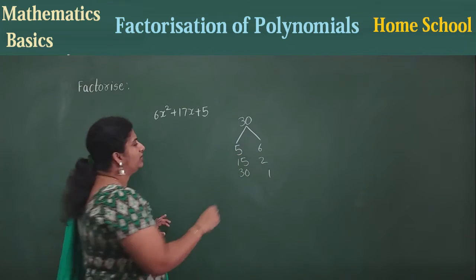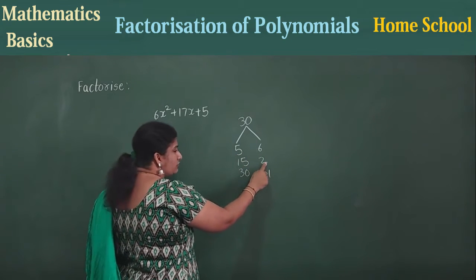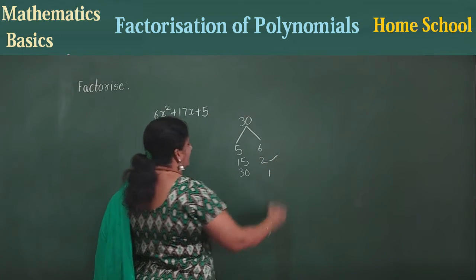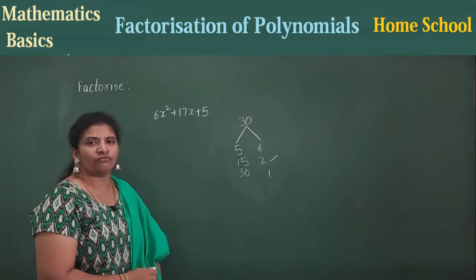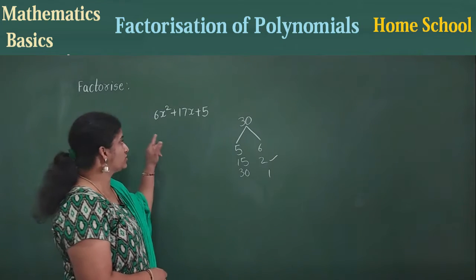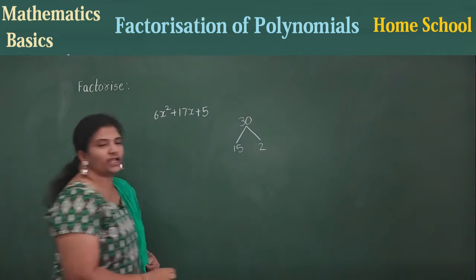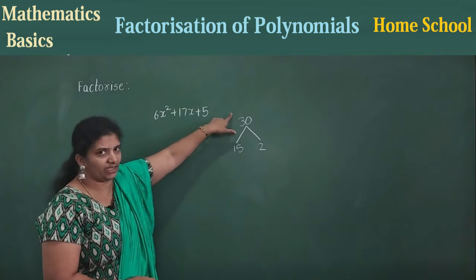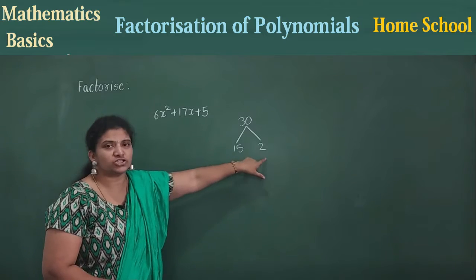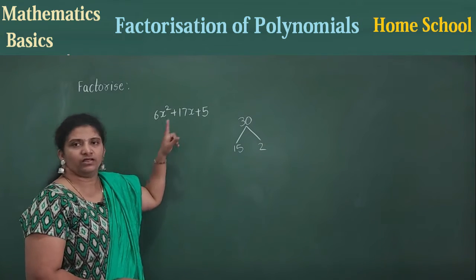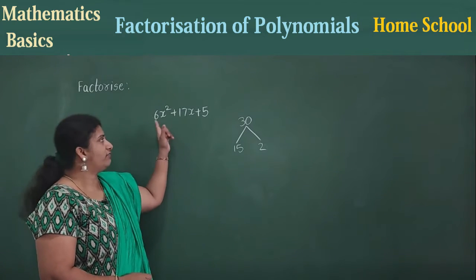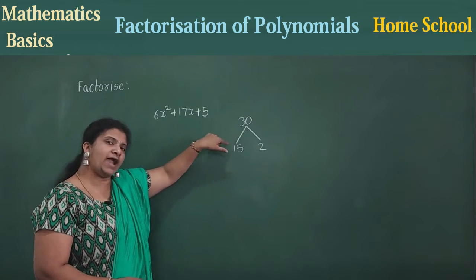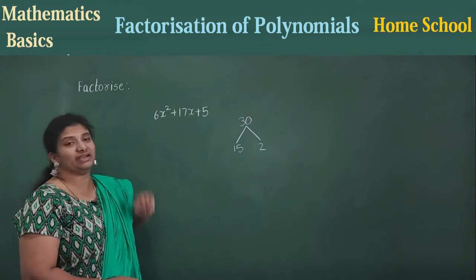Check it out: 5 plus 6 is 11, 5 minus 6 is minus 1 — we won't get 17. So 15 plus 2 is 17. Yes! I'm going to take this pair. This is the pair of factors I need. If you multiply you should get 30, and if you add or subtract you should get the middle value, 17.